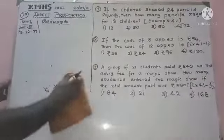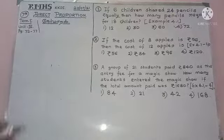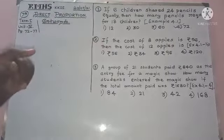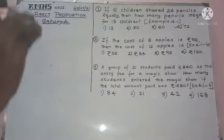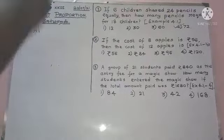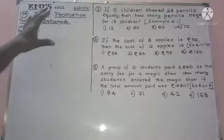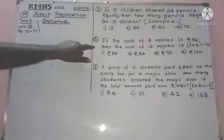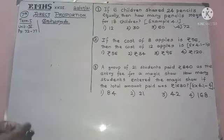If the cost of 8 apples is 56 rupees, we will increase this number. This is direct proportion — there is no doubt. As I said, this is a filling-the-blanks type. In this case, we are talking about a unitary method.